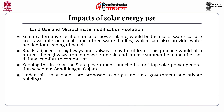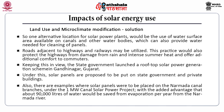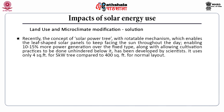Under this scheme, solar panels are proposed to be put on state government and private buildings. There are also examples where solar panels were placed on Narmada Canal branches under the 1MW Canal Solar Power Project, with the added advantage that 90,000 liters of water would be saved from evaporation per year from the Narmada River. The concept of a solar power tree with rotatable mechanism enables leaf-shaped solar panels to keep facing the sun throughout the day, enabling 10 to 15% more power generation over fixed types while allowing cultivation without hindrance.